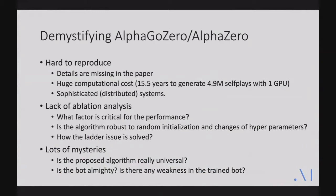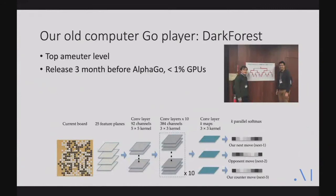This created many mysteries. Some people are skeptical, thinking parameters were tuned to the data. Others think the algorithm is universal and can solve every problem, which may not be the case. There's also a lack of ablation studies — which factor is critical, what are the weaknesses? Because we had prior experience on computer Go with our DarkForest project — a Go bot released three months before AlphaGo in November 2015, built by my interns and me — we decided to try to reproduce AlphaGo and AlphaZero.